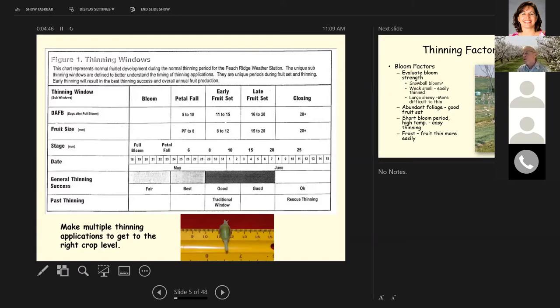We used to thin once and hope that we got most of the fruit off the tree. But the idea now is to use multiple applications of thinners to progressively take more off the tree to get to the right point. Here you can see a fruit at the bottom laying on a millimeter scale. This fruit is 10 millimeters in diameter which corresponds to the early fruit set stage. These fruit grow very rapidly and this sounds ideal. You put it on a certain stage and you thin them off but the weather doesn't cooperate in a lot of cases.